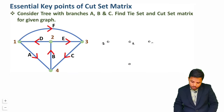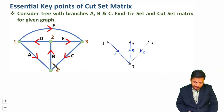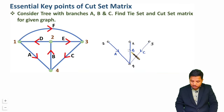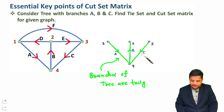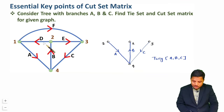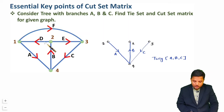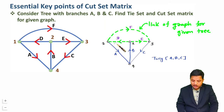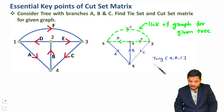Let me draw that first. I have connected branches ABC with the given graph, and this is the tree of this graph. When you have a tree of the graph, the branches of that tree are referred to as twigs. So here, with this tree, the twigs are A, B, and C.